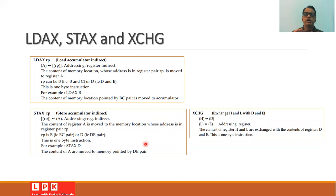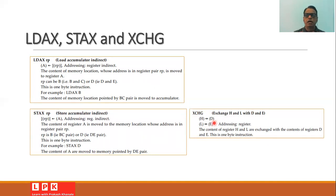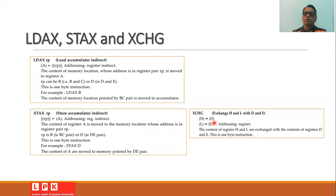It is also possible to exchange the contents of register pairs using the XCHG instruction. XCHG exchanges the contents of H and L with D and E: the content of H is exchanged with D and the content of L is exchanged with E. This is a very useful instruction that is frequently needed while writing assembly language programs.